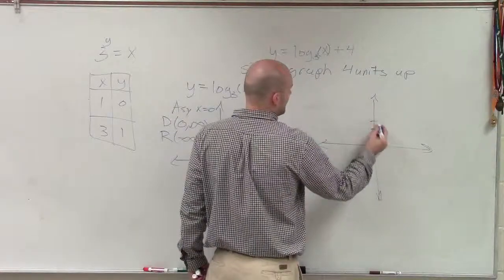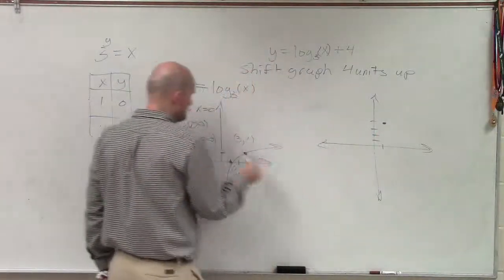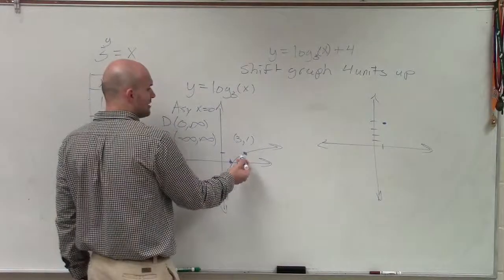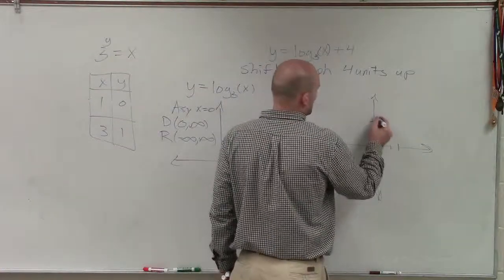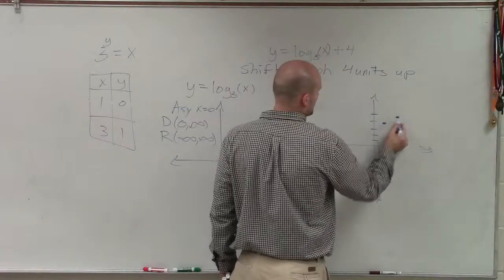That's 1, 2, 3, 4. And then my next point is over 3, up 1. Well, now it's going to be over 3, up 5. And my graph is still going to be the same as far as left and right.